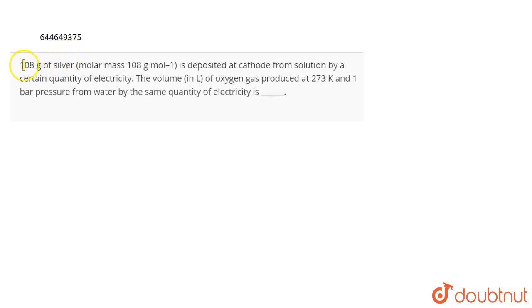The question is: 108 grams of silver with molecular mass 108 grams per mole is deposited at cathode from the solution by a certain quantity of electricity. The volume in liters of oxygen gas produced at 273 Kelvin and 1 bar pressure from water by the same quantity of electricity is...